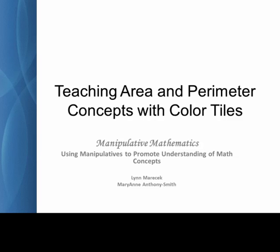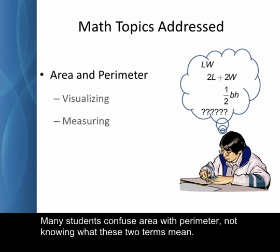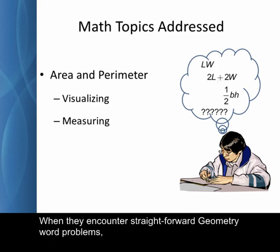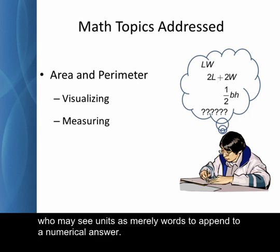Teaching Area and Perimeter Concepts with Color Tiles. Many students confuse area with perimeter, not knowing what these two terms mean. When they encounter straightforward geometry word problems, they may set up the problem with the wrong formula. As a result, linear and square measurement have little meaning for students who may see units as merely words to append to a numerical answer.